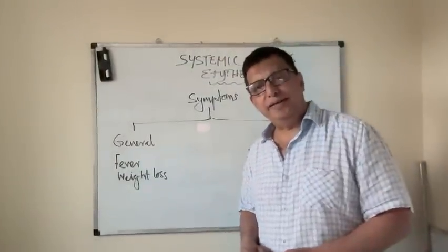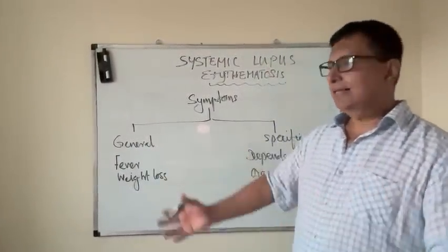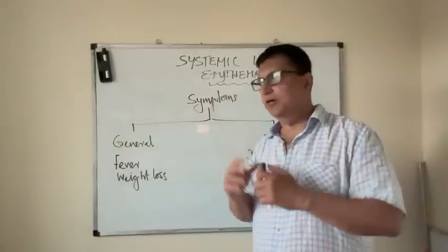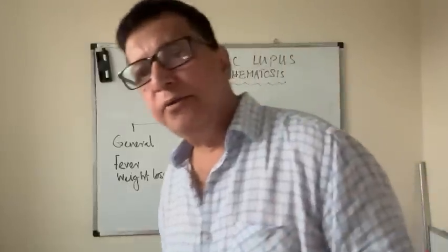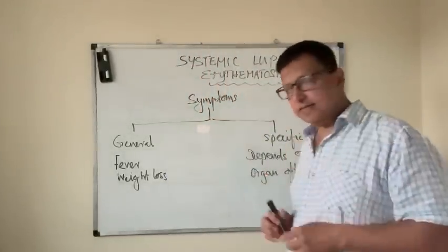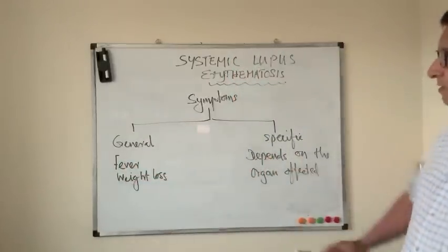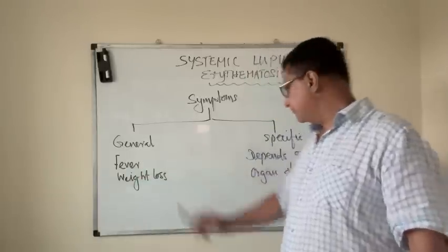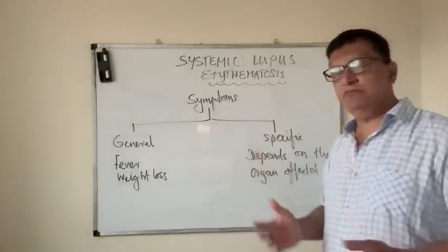The symptoms of SLE include arthralgia, photosensitivity rash, fever, weight loss, and generally being unwell — these are the most common features. There are general symptoms and specific symptoms. General symptoms are fever, weight loss, and so on, while specific symptoms depend upon which system is affected.